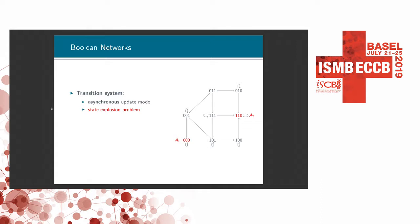This figure is the transition system of the toy example from the previous slide. Each node is a binary string representing a state. I'd like to draw your attention to the size of the state space. This toy example has only three nodes and there are two to the power three — eight states. Imagine a network with hundreds or thousands of nodes: their state space is exponential in the size of the network. This infamous state explosion problem is the biggest challenge to analyze or control large-scale networks.